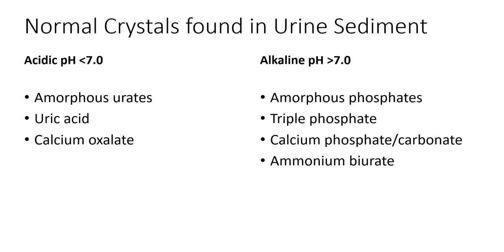On the acidic side, which is less than seven, we have amorphous urates, uric acid crystals, and calcium oxalate crystals. On the alkaline side, which is above seven, you have amorphous phosphates, triple phosphates, calcium phosphate or carbonate, and ammonium biurate. Ammonium biurate is the only urate on the alkaline side, and it only shows up when the urine has been sitting for an excessively long time.